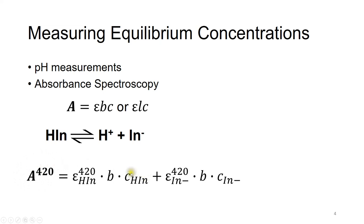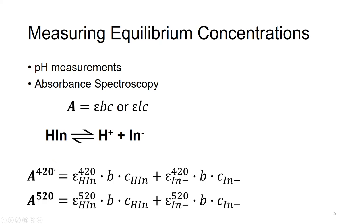We're using Beer's Law twice. The first time, we use Beer's Law for HIn, the acidic form, at 420 nanometers. We also have absorbance of In⁻ at the same wavelength, 420 nanometers, so together we have the total absorbance at 420 nanometers. We can do the same thing at a different wavelength, 520 nanometers — HIn absorbs at 520 nm and In⁻ also absorbs at 520 nm.